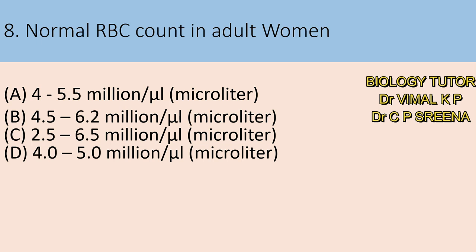Normal WBC count in adult women: A. 4 to 5.5 million per microliter, B. 4.5 to 6.2, C. 2.5 to 6.5, D. 4 to 5. Here answer is A — 4 to 5.5 million per microliter. You should remember this: normal WBC count in adult women is 4 to 5.5 million per microliter.